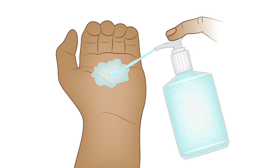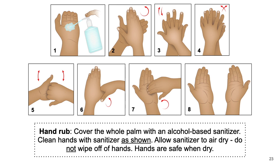The same principles apply with hand sanitizer. Hand washing with soap is a must for patients with C. diff and whenever hands are grossly contaminated. For viruses, you need an alcohol-based hand sanitizer with at least 65–75% alcohol content. The steps for hand sanitizer are the same as for hand washing with soap and water.